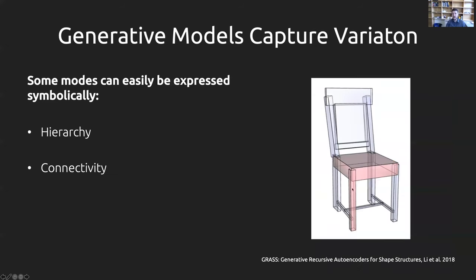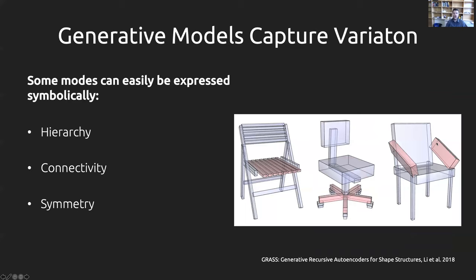Other forms of relations like connectivity — the fact that a leg is attached to the base at a specific point — can also be expressed with symbolic operators. Higher-order relations like symmetry are also fairly symbolic: a translational symmetry group of horizontal slats, a rotational symmetry group of swivel chair legs, or a reflectional symmetry group on arm pieces. I could write down that this is a translational group with eight repetitions, with a base geometry and a translational offset vector — all expressible fairly interpretively.